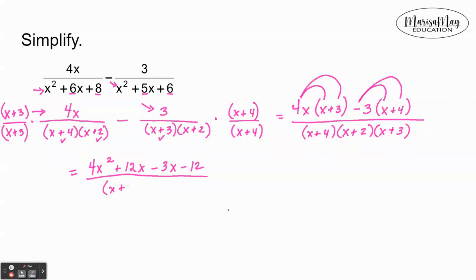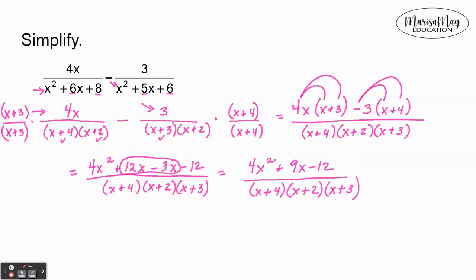But what I need to do now is to go ahead and combine these two like terms. So 12x minus 3x is going to give me 9x. And I'm gonna leave my denominator as we said just like it is. And friends, that's it. We have combined these two, we've subtracted them and then simplified where we could.